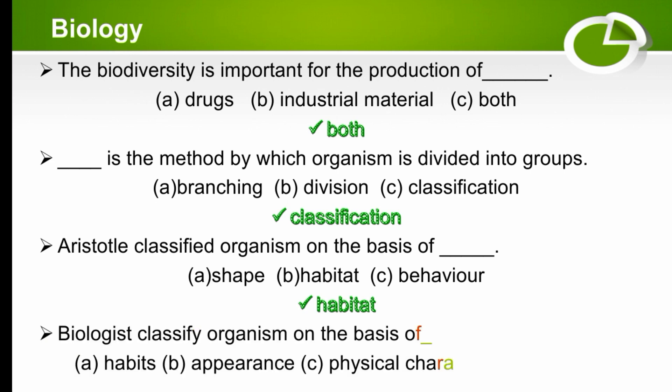Biologists classify organisms on the basis of — habitat, habits, appearance, or physical character? Biologists nowadays classify organisms on the basis of physical appearance. The right option is physical character.